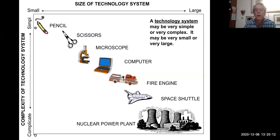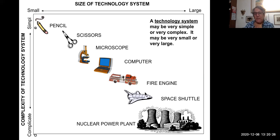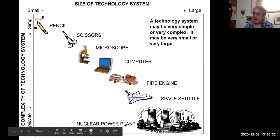Scissors — technology system. Microscope. These are going up in levels of complexity. Computers. A fire engine is more complex than a computer because a fire engine has computers in it. Space shuttle — very complex, very critical systems; people's lives are on the line. And nuclear power plants — same thing.